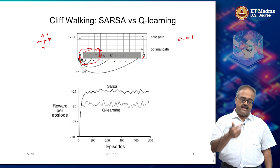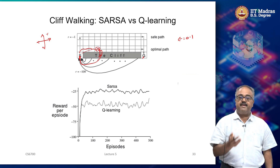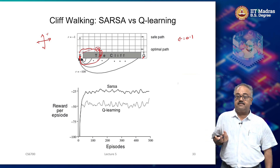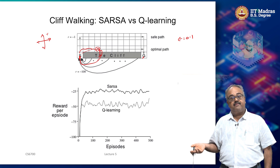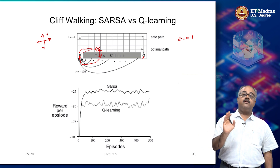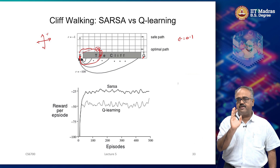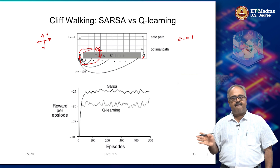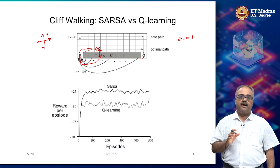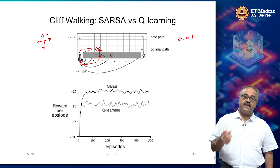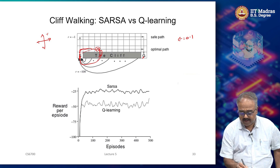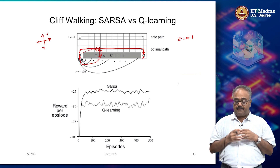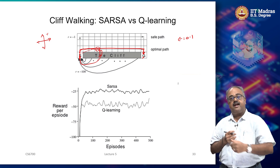So Q-learning does not care that it fell off the cliff during an episode — when updating it looks at the best action, which is to keep going east. Therefore when learning converges, the optimal path according to Q-learning is to hug the cliff and go straight across — it learns the true optimal path.